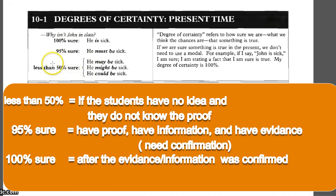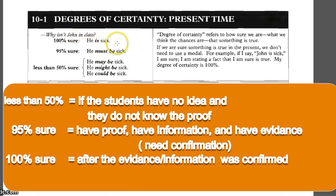In conclusion, for degree of certainty in the present: less than 50% sure, we use the modals 'might,' 'could,' or 'maybe.' For 95% sure, we use 'must.' When 100% sure, we don't use a modal but use the verb 'to be.' Since the subject is 'he,' the to-be is 'is,' so: 'He is sick.'